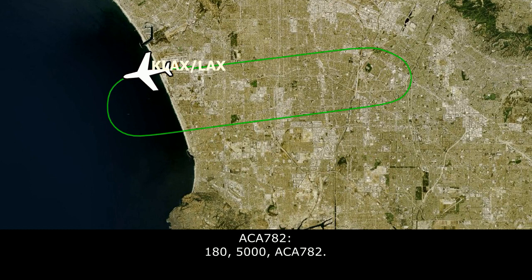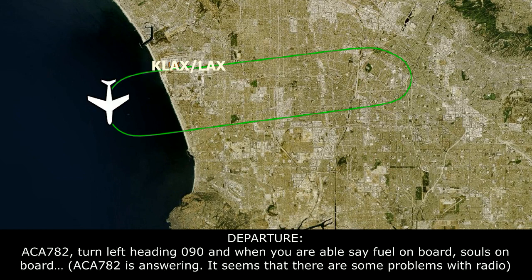Air Canada 782, turn left heading 090. When you're able, state fuel on board and souls on board.